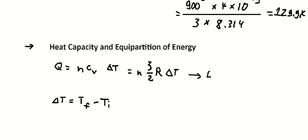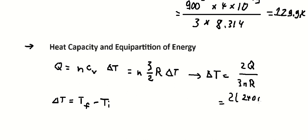Solving for delta T, we get delta T equals 2Q divided by 3nR. Plugging in the numbers: Q = 2400 joules, divided by 3 multiplied by 3 moles, multiplied by 8.314. We calculate this and get about 64 K.